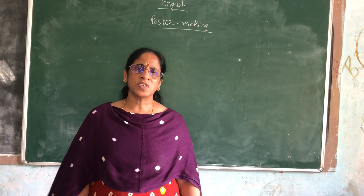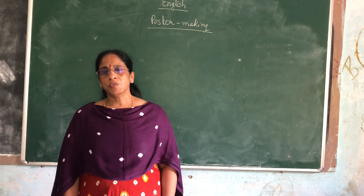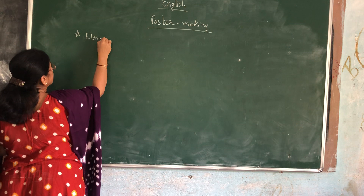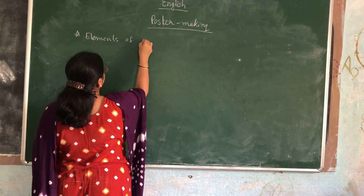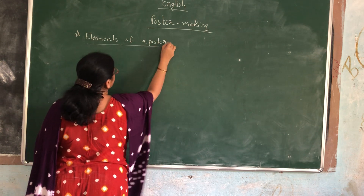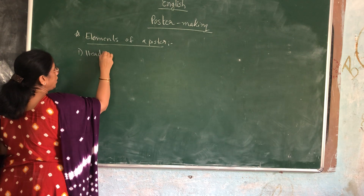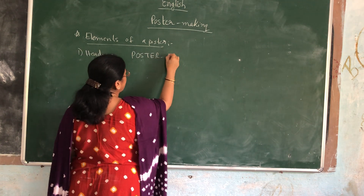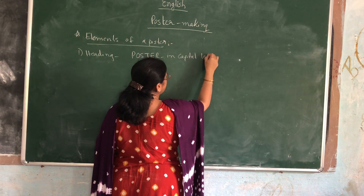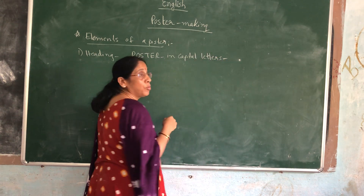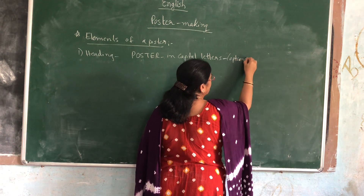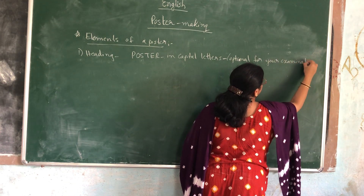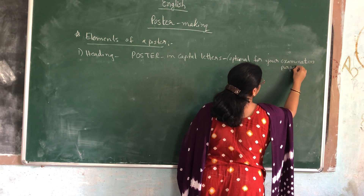So many kinds of posters are prepared. But what you should remember is: what should a poster include? We call these the elements of a poster — whatever the poster should include. The first thing is heading. It should be written as 'POSTER' in capital letters. This heading is optional and only for your examination purpose. Only for your exam, you need to mention the heading as well.